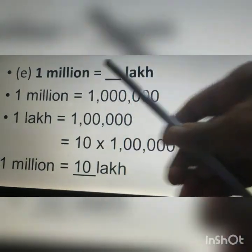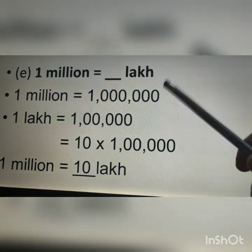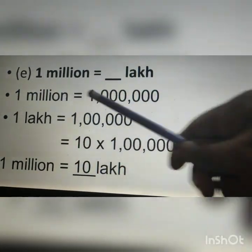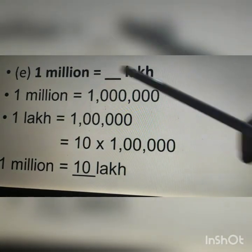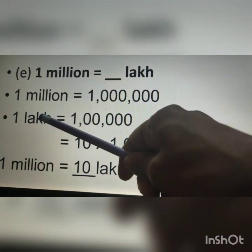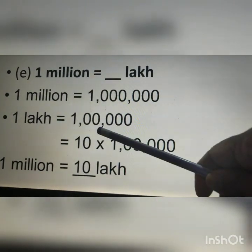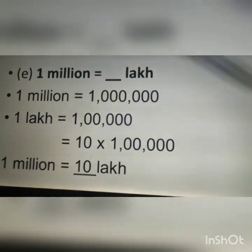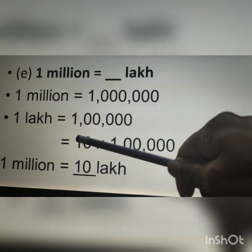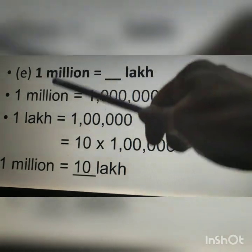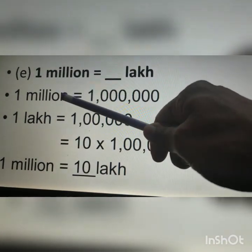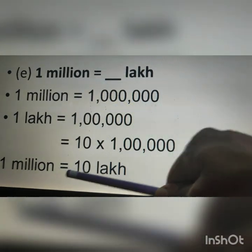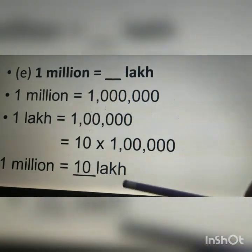Question E: 1 million is equal to how many lakhs? We know in 1 million there are 6 zeros and in 1 lakh there are 5 zeros. So if we multiply 1 lakh with 10 we will get 1 followed by 6 zeros, which is equal to 1 million. Therefore, 1 million is equal to 10 lakhs.